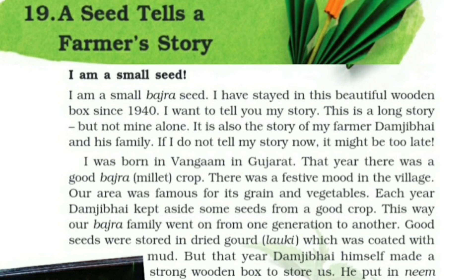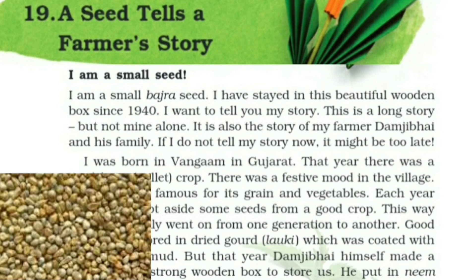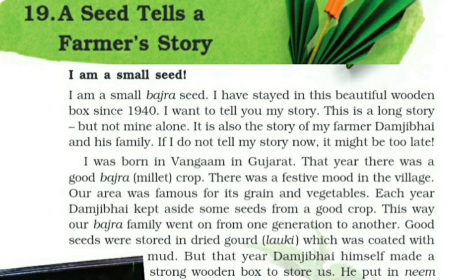'I was born in Vankham in Gujarat. That year, there was a good bajra — bajra, that is a millet — crop. There was a festive mood in the village. Our area was famous for its grain and vegetables. Each year, Damji Bai kept aside some seeds from a good crop. This way, our bajra family went on from one generation to another. Good seeds were stored in dry gourd, which was coated with mud.'